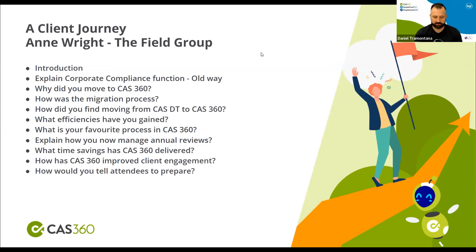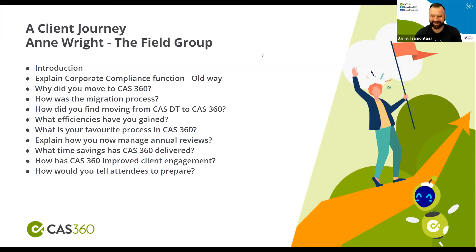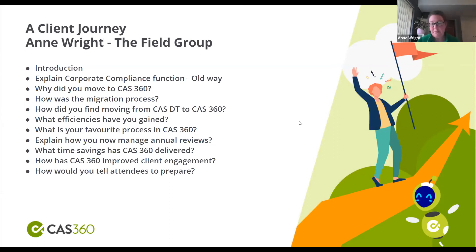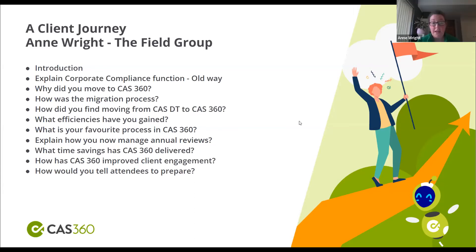Anne tried the bulk processing feature when it first came out, but personally prefers not to use it because she always copies the accountant when sending out annual reviews, and that function didn't allow her to do that. She doesn't have a formal review process — she just copies the accountant in so they're aware, and in most cases they don't need to see them, so she simply sends and copies them in.